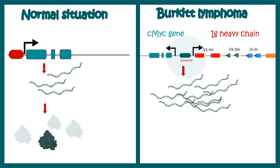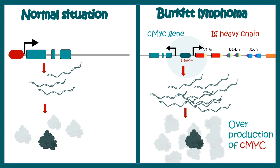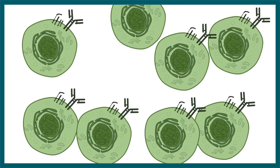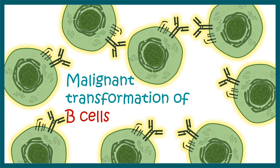As a result, several times more CMYC transcript is produced. This leads to overproduction of CMYC protein, which drives division and proliferation of the B cell, ultimately leading to malignant transformation of the B cell.